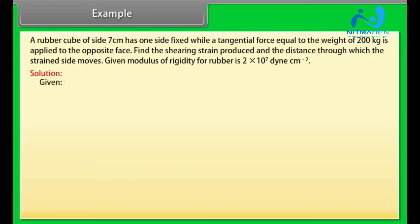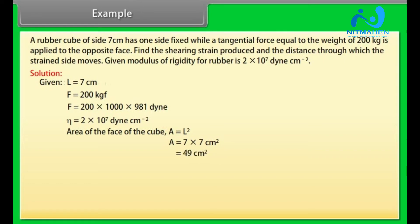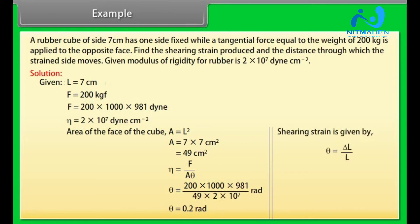Let's see the solution. Given L = 7 cm and F = 200 kg. Converting the value of F into dynes, we get F = 200 × 1000 × 981 dyne. η is given by 2 × 10⁷ dyne per centimeter square. We know that area of the face of the cube A = L². Putting the values of L, we get A = 7 × 7 = 49 cm². We know that η = F upon A θ. By putting respective values, we can calculate the value of θ which is equal to 0.2 radian. Shearing strain is given by ΔL upon L. ΔL = 7 × 0.2 cm. After calculation we get the value of ΔL equal to 1.4 cm.